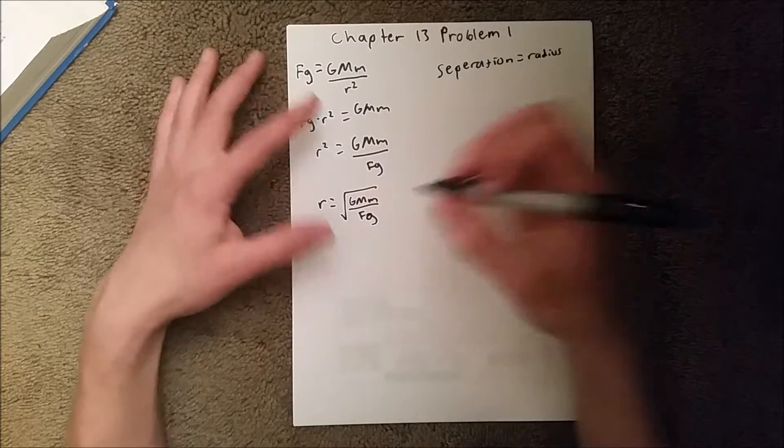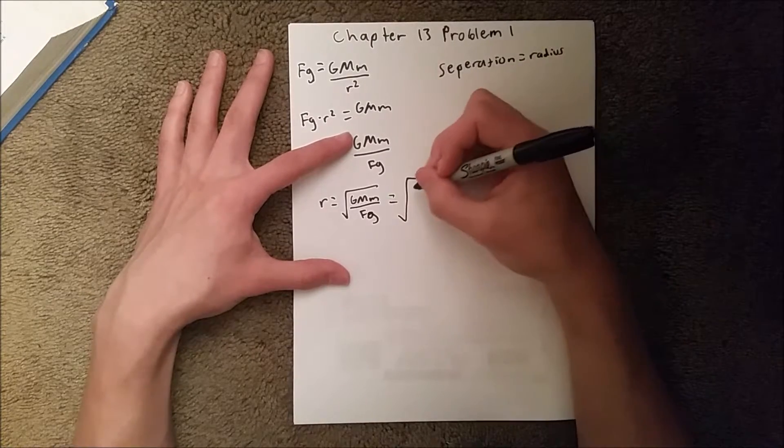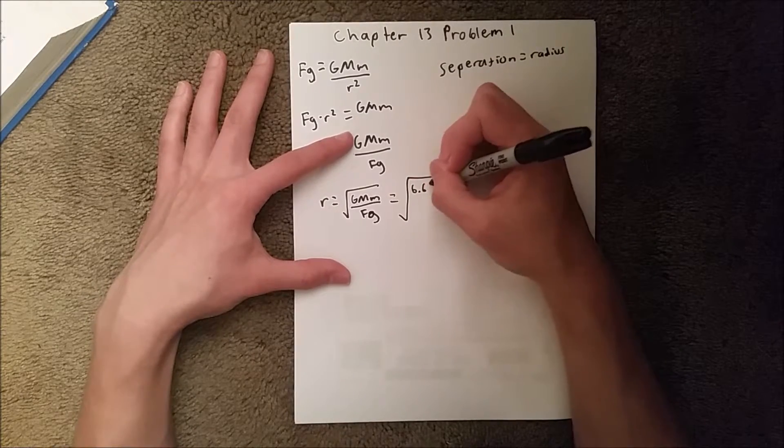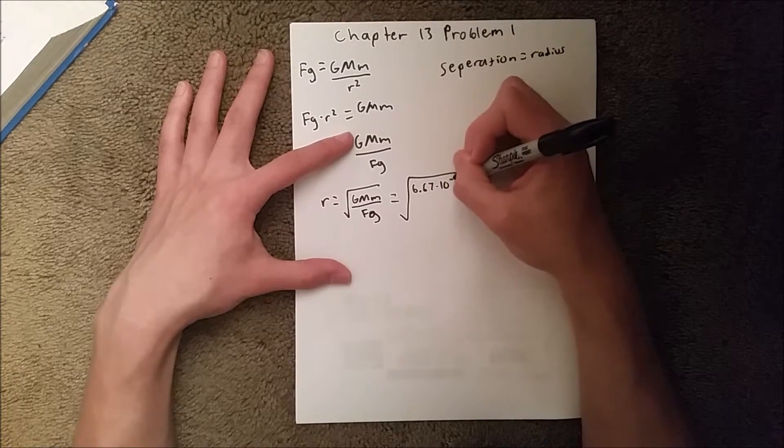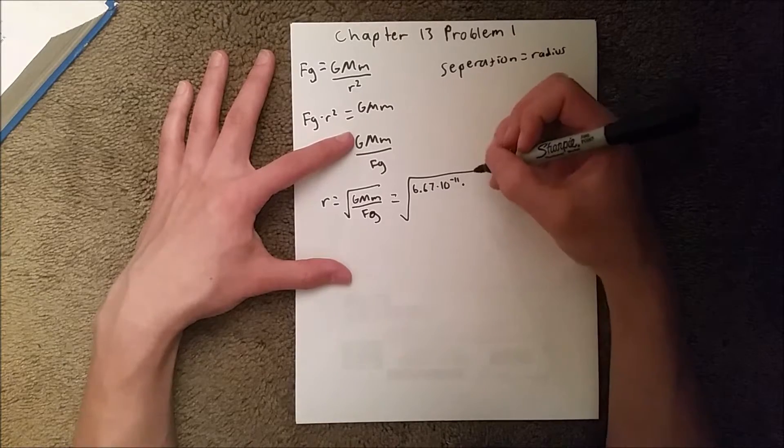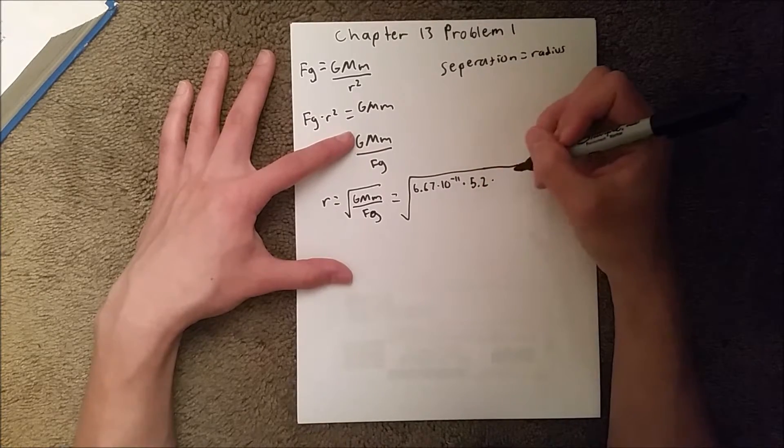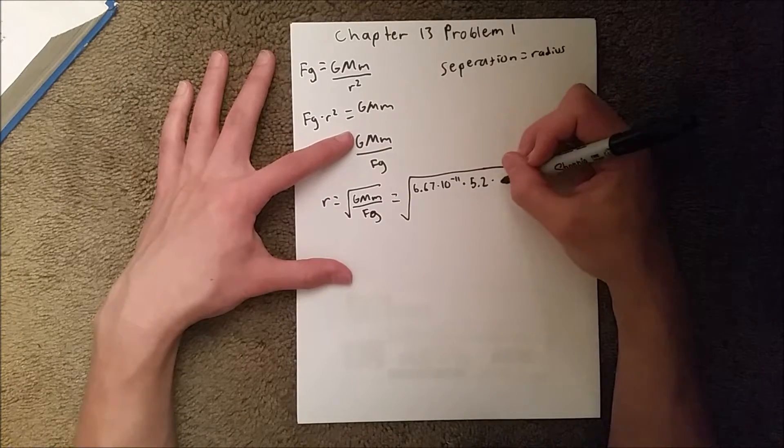If we plug in our values, we know G is 6.67 times 10 to the negative 11th, times our first mass which is 5.2, times our second mass which is 2.4.